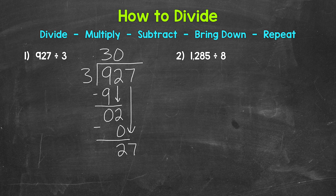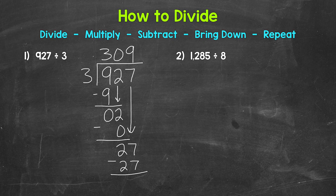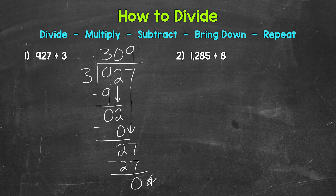Now we have 27, and we repeat — go back to divide. We have 27 divided by 3. How many groups of 3 in 27? Well, 9 — and that hits 27 exactly. So we write our 9 up here. Multiply: 9 times 3 is 27. Subtract: 27 minus 27 is 0, and we are done. Our answer is 309. We know we are done because we went all the way to the 1's place within our dividend and don't have anything else to bring down. The 0 at the bottom tells us we do not have a remainder. Our final answer is 309.